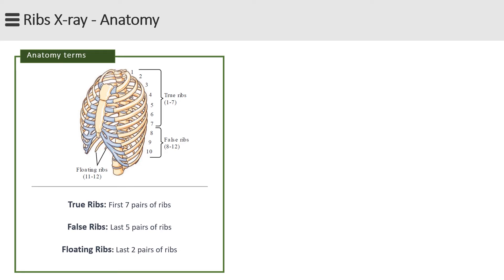Let's continue with the anatomy of the ribs, as it is very important and helpful for technologists to always bear in mind the shape and anatomy of the ribs. This may help them to choose the correct projections and angle of the tube. Each rib is numbered according to the thoracic vertebra to which it is attached. The first seven pairs of ribs are considered true ribs, and the term false ribs applies to the last five pairs numbered 8 to 12, with the last two pairs (11 and 12) being the floating ribs, which do not possess costal cartilage.